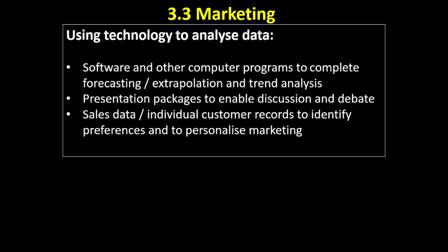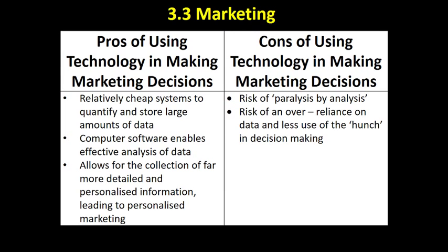Using technology to track sales data and individual customer preferences leads to the ability to identify individual preferences and personalise marketing. For example, when I log onto the Amazon website, the first thing I see is a bunch of business studies, economics, and teaching books. Amazon has a record of my previous searches and knows I may well be looking for books like that — which might nudge me towards making a purchase. So those are the benefits of using technology in making marketing decisions.